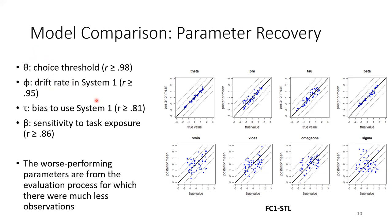Similarly, the drift rate in System 1, the bias to use System 1, and the sensitivity to task exposure all performed satisfyingly across the best performing models. However, those in the bottom row performed worse, and these parameters are all from the single process models involved in the evaluation process. This could be caused by the fact that many choices in the middle of a trial were fast and automatic, using only System 1, leaving few observations for estimating these parameters. Also, the computation of the probability of choices was rather complicated, making it harder to estimate these parameters.